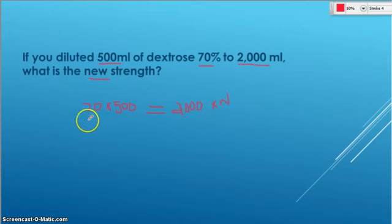So 70 times 500 is going to be 35,000. And that's going to equal 2,000N. Divide both sides by that 2,000. So when you take 35,000 and divide it by 2,000. We're going to get 17.5 percent. So that's how we use the dilution formula.